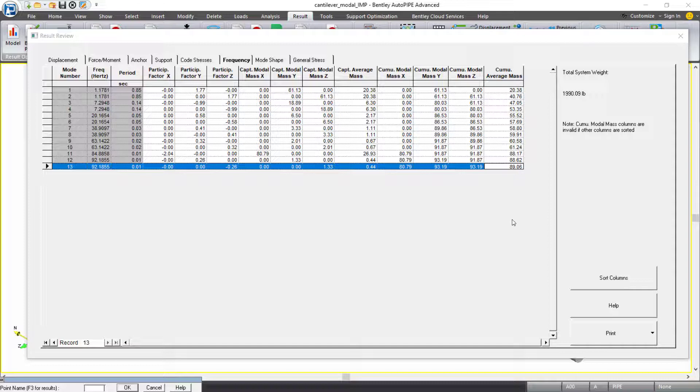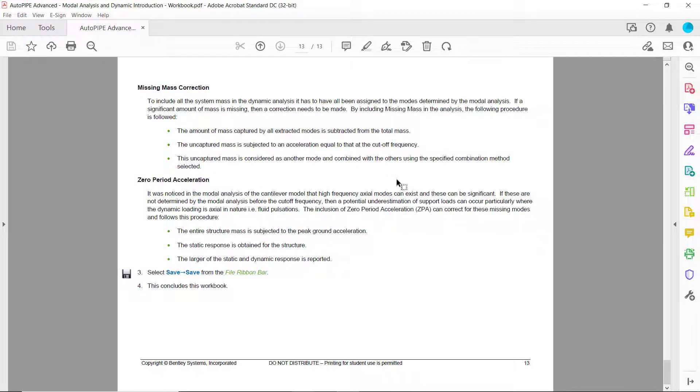In order to capture the other 11% of modal mass for this model to get a full 100% analysis, we can use our static correction methods. So the last page in the workbook does show a review of the different static correction methods available. We have missing mass correction. So to include all the system mass in the dynamic analysis, it has to have all been assigned to modes determined by the modal analysis. And if a significant amount of mass is missing, then a correction needs to be made.